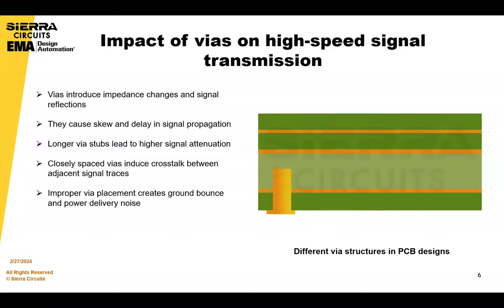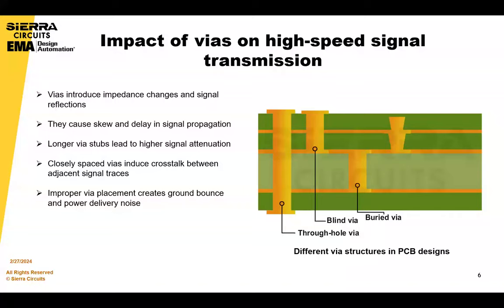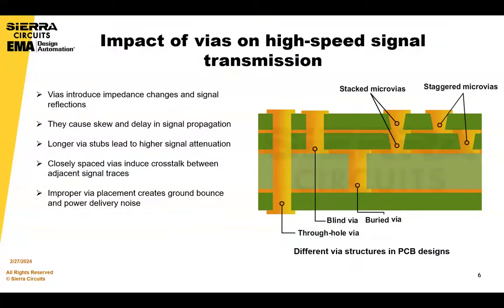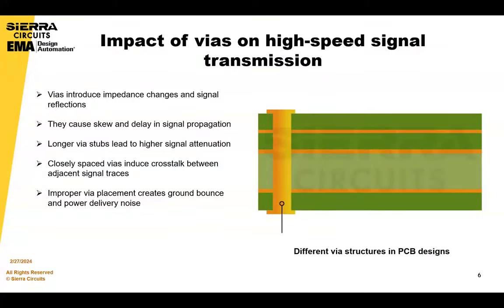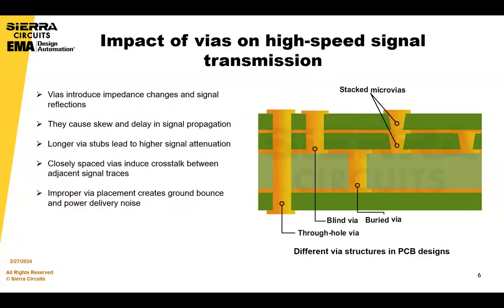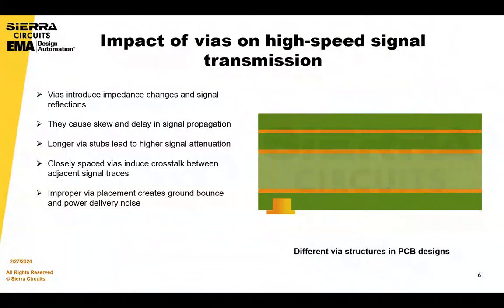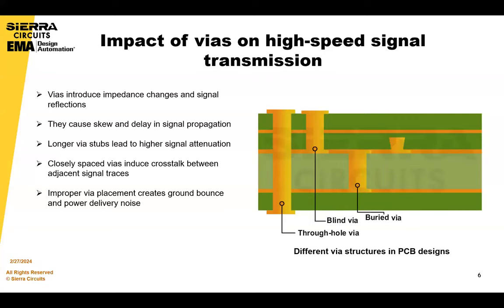When VIAs are closely spaced, the EM fields generated by adjacent signal traces can interfere with each other, inducing crosstalk. And lastly, improper VIA placement can disrupt the return path for signals, causing ground bounce and power delivery noise. These are really important to keep track of in terms of your VIA placements.